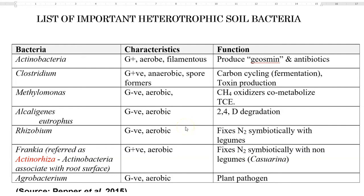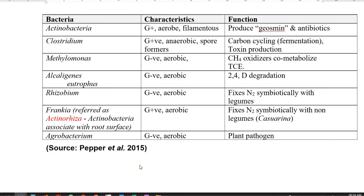The first one is Acidobacteria, which consists of large filamentous cells and they are the antibiotic producers of the soil system. They are all gram positive and aerobic, and their function is mainly biodegradation in the soil. In addition, they produce Geosmin.